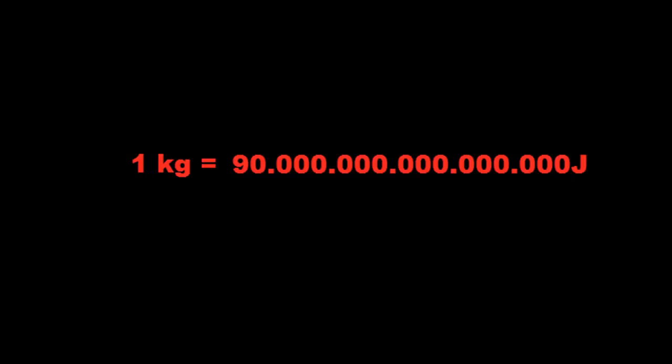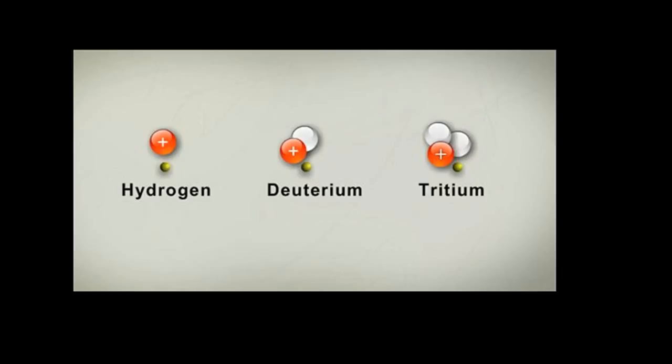A standard nuclear fusion reaction is one of deuterium fusing with tritium. Deuterium is a hydrogen isotope with one proton and one neutron. The mass of deuterium in AMU is equal to 2.014102. Tritium is also a hydrogen isotope, with one proton and two neutrons. Its mass is equal to 3.016049 AMU.